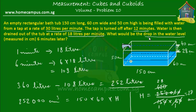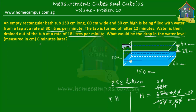Now what we have to find is the drop in the water level — the difference in the two heights. That's quite simple: 40 minus 28 equals 12. So the drop in the water level is 12 centimeters. That's the answer to this word problem.